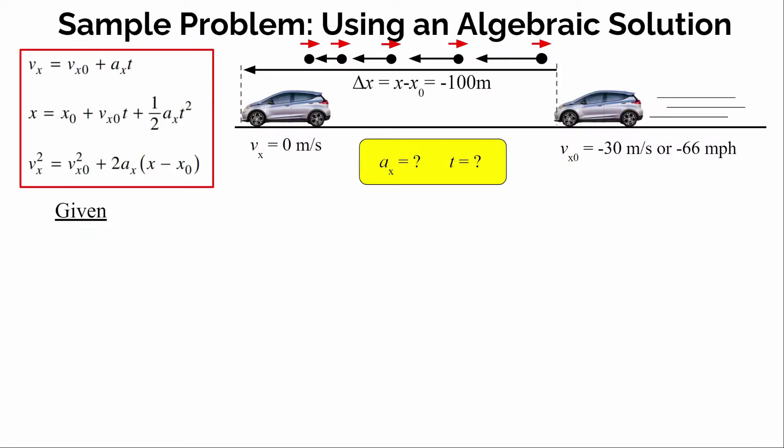We're going to look at one sample problem to see if we can use these three algebraic equations to solve for common questions like the acceleration of something or how much time something takes. We have a car moving initially with a velocity of negative 30 meters per second — moving to the left in the negative direction, about 66 miles an hour. The driver hits the brakes and gradually comes to a stop, so the final velocity is zero. The car was displaced negative 100 meters while slowing down. We want to find the acceleration of the car.